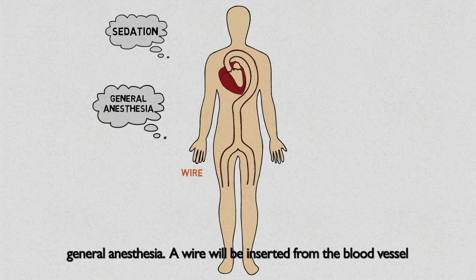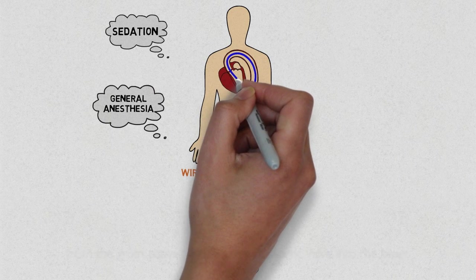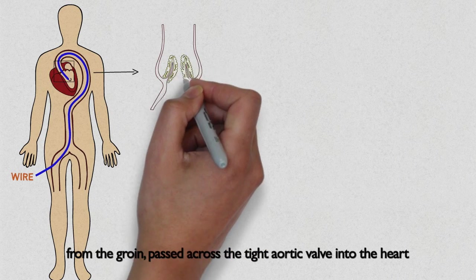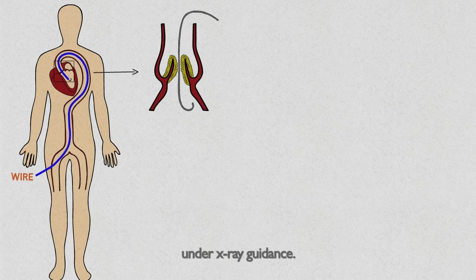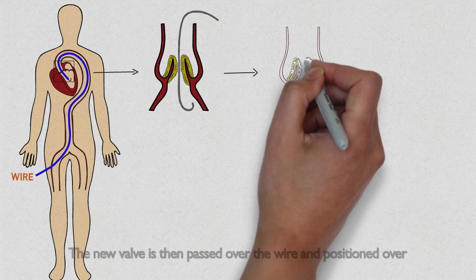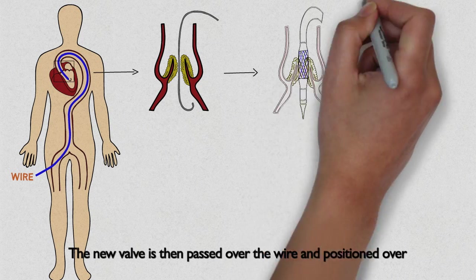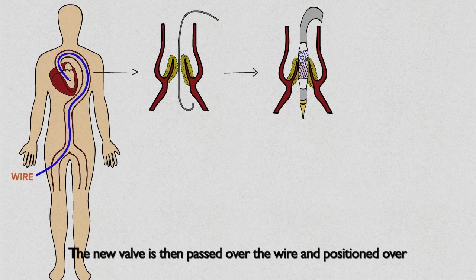A wire will be inserted from the blood vessel in the groin, passed across the tight aortic valve into the heart under x-ray guidance. The new valve is then passed over the wire and positioned over the tight aortic valve.